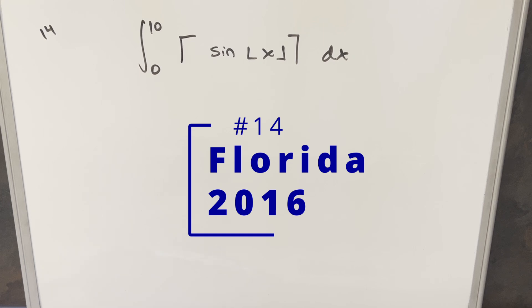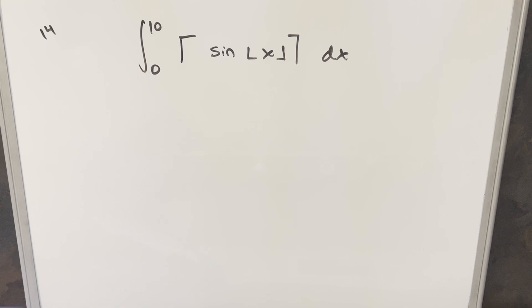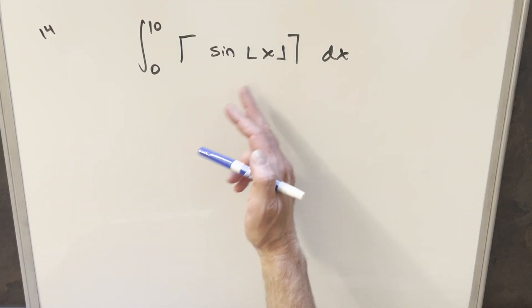We have the integral from 0 to 10 of the ceiling function of the sine of the floor of x, dx. Now this doesn't look too bad. We've got the floor and the ceiling in the same problem.